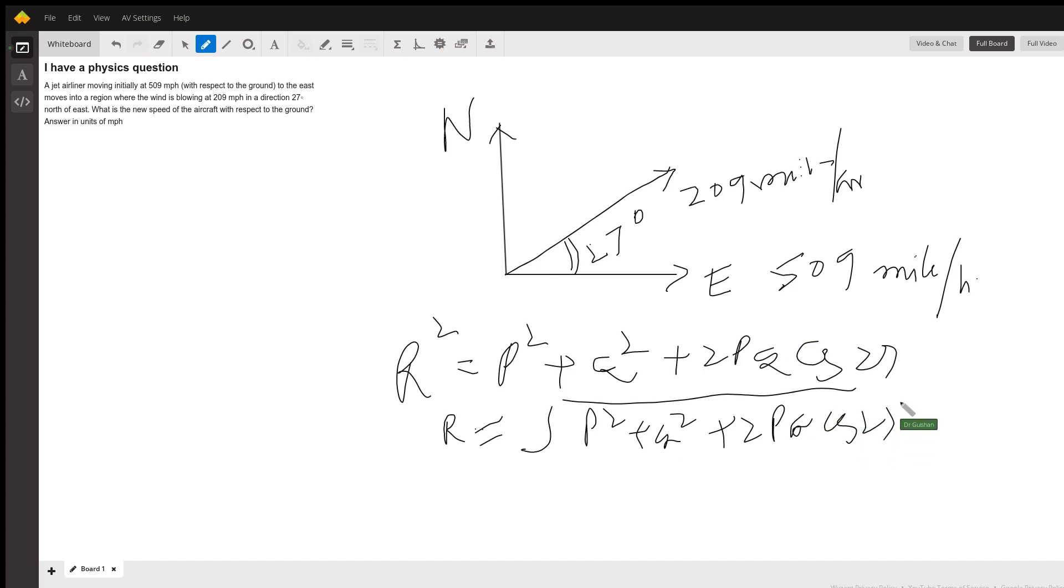So you plug in the value of cos 27 and you get the resultant speed and the units of this speed would be of miles per hour. Thank you. Hope this should work.